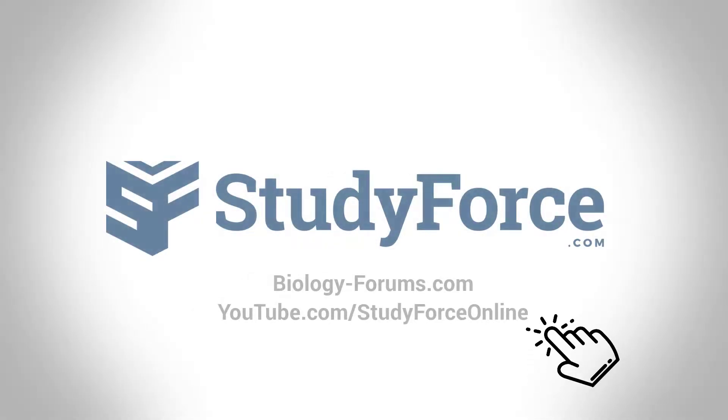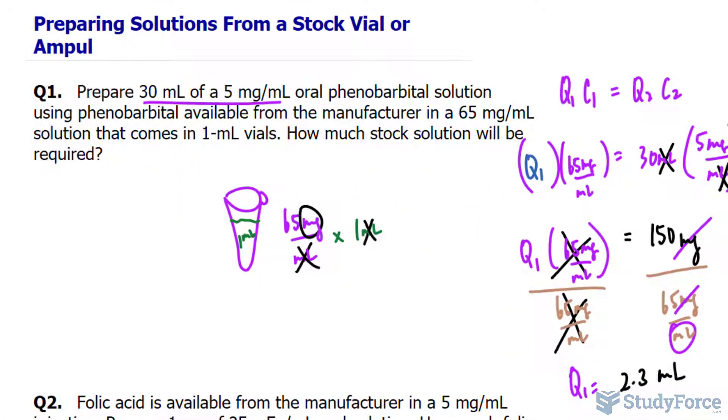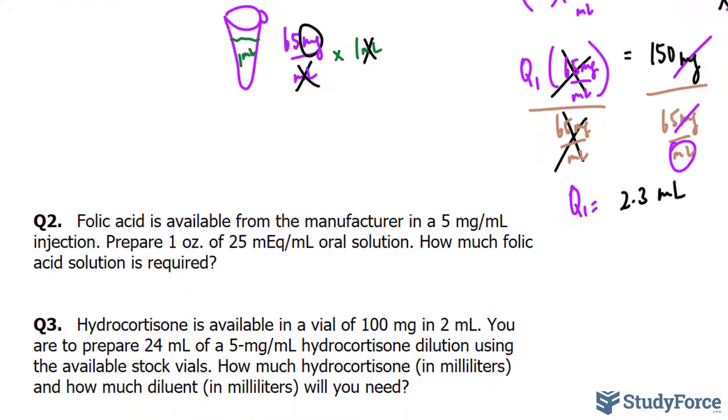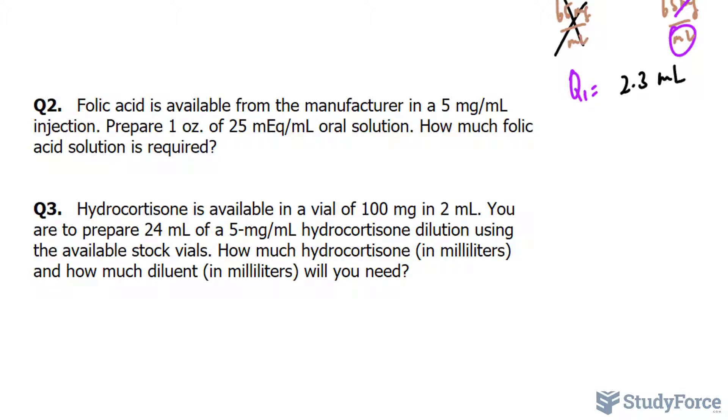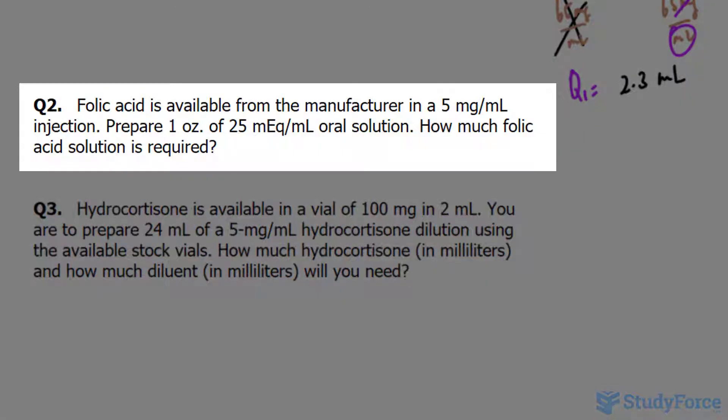Welcome back to the next part of our lesson on how to prepare solutions from a stock vial or ampoule. We ended up answering question number one, and in question number two we have the following scenario. Folic acid is available from the manufacturer in a 5 mg per milliliter injection. That's the concentration of the stock solution. Prepare one ounce of 25 mEq per milliliter oral solution. How much folic acid solution is required?